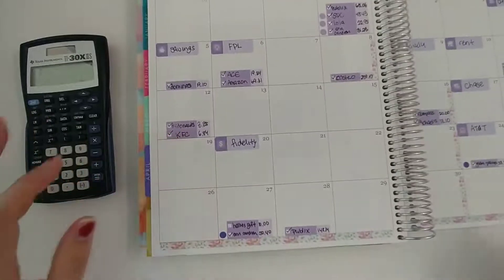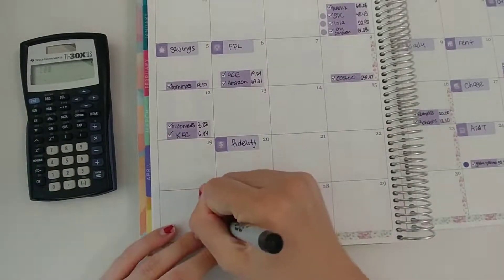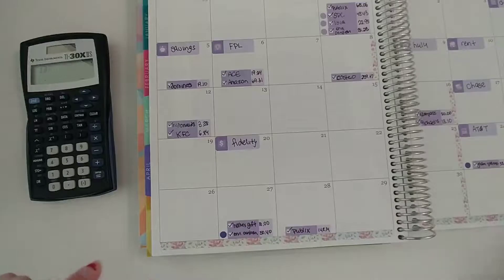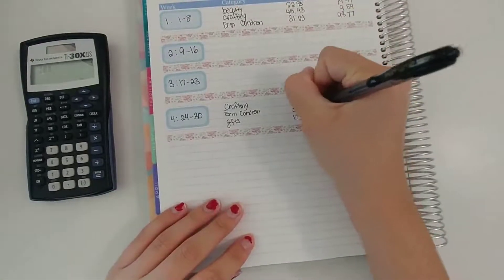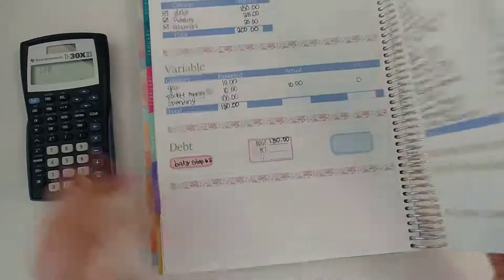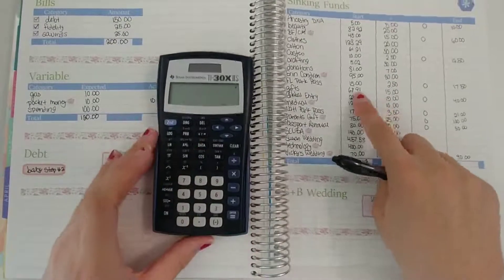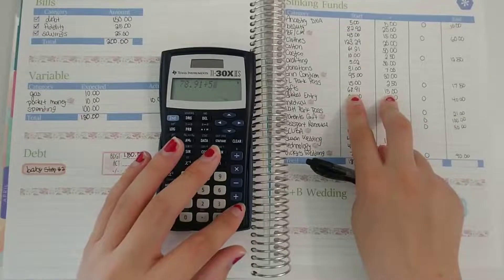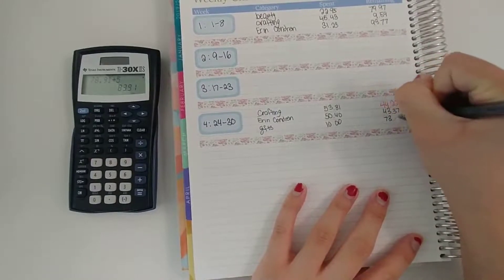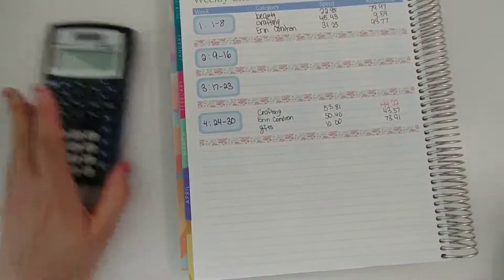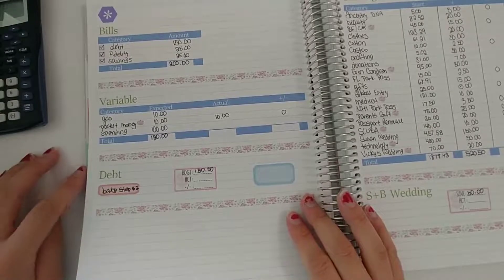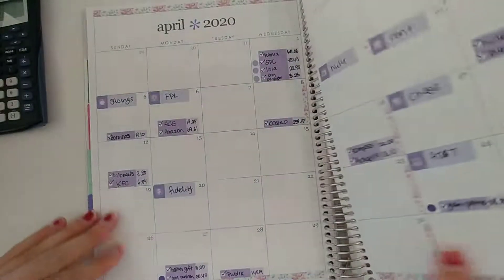And then last but not least is gifts. It was a friend's birthday and some of us got together to order her, I think it was like a cookie cake type thing and that was $10. I have $83.91 in gifts so now I have $73.91 remaining. Okay so that is all for my weekly check-in.